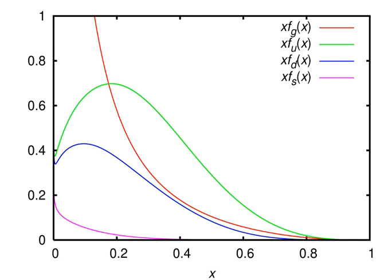A parton distribution function within so-called collinear factorization is defined as the probability density for finding a particle with a certain longitudinal momentum fraction x at resolution scale Q². Because of the inherent non-perturbative nature of partons which cannot be observed as free particles, parton densities cannot be calculated using perturbative QCD.